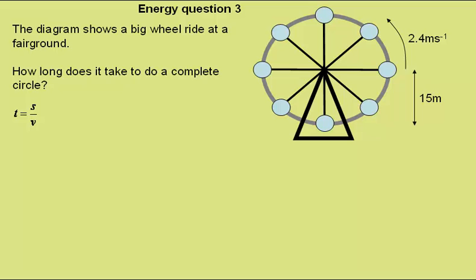Well, the time will be equal to the distance over the speed. The speed we're given is 2.4 metres per second and the distance we can get from the circumference of a circle of radius 15 metres. So the distance will be the circumference of the circle, which is 2πr, meaning the time will be the distance 2πr over the speed v.